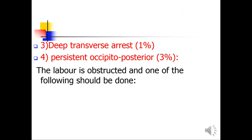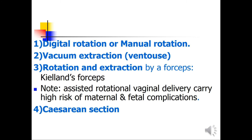Deep transverse arrest occurs in one percent of cases, and persistent occipital posterior in three percent. In these obstructed cases, one of the following should be done: number one, digital or manual rotation of the fetal head; number two, vacuum extraction; number three, rotation and extraction by forceps — Kielland forceps. However, assisted rotational vaginal delivery carries a high risk of maternal and fetal complications. The safer option — number four — is cesarean section.